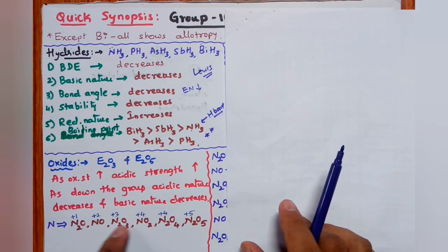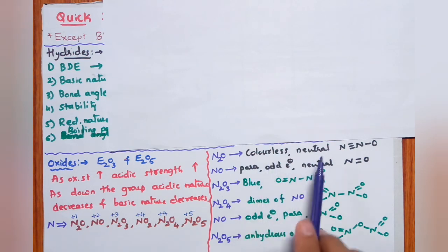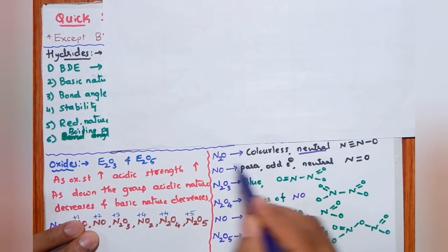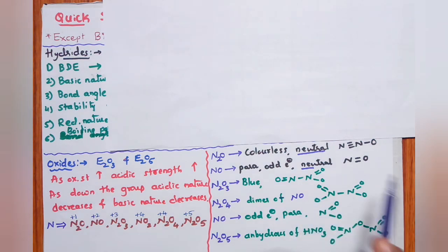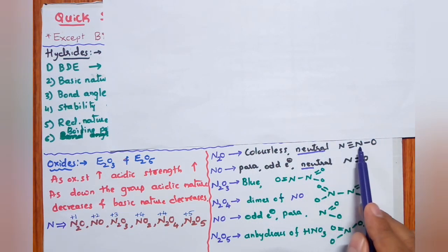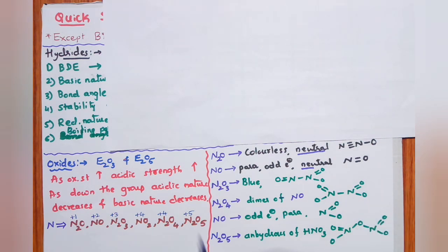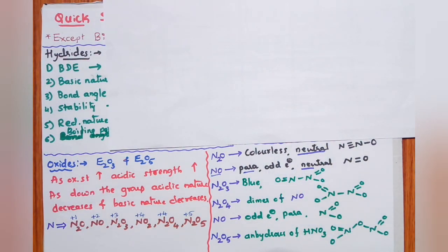The six oxides of nitrogen are: N2O, NO, N2O3, NO2, N2O4, N2O5. N2O is colorless and neutral; NO is also neutral — these are the two neutral oxides of nitrogen. NO is paramagnetic — it is an odd-electron molecule. The resonating structures of N2O are: N≡N−O and N=N=O.